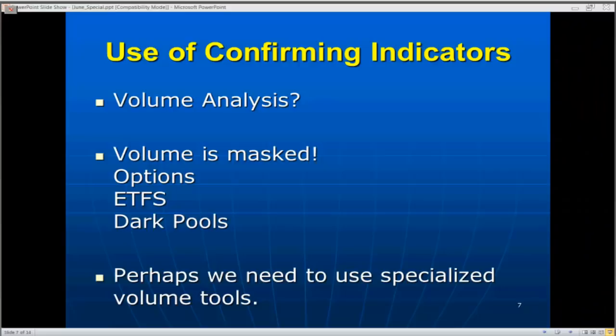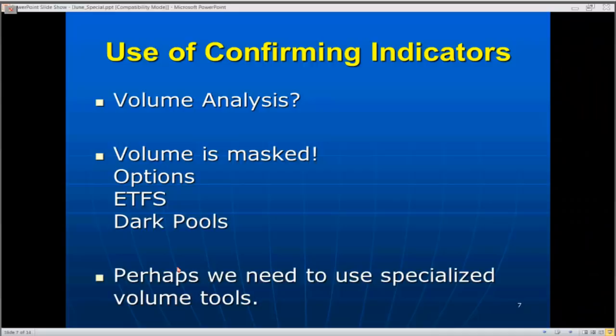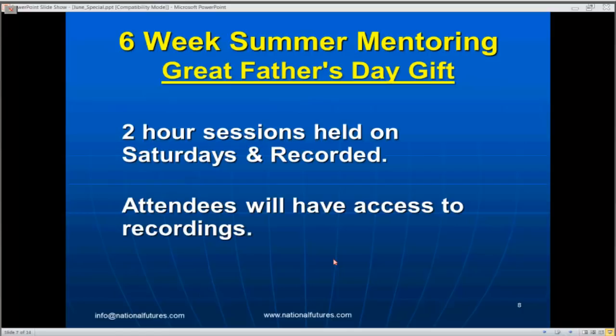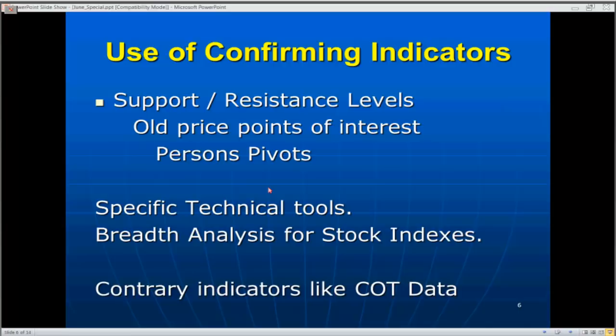Since volume analysis is masked, there is a tool I've been using and teaching: on-balance volume. When I look at support and resistance, are we near support levels? Are we near Persons Pivots? One of the tools I look at — not programmed yet on TOS — is a quarterly pivot point. I've been using those for a long time. Let's go over to a pivot calculator real quick and compute quarterly pivots for the euro.